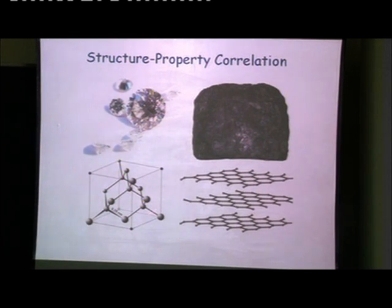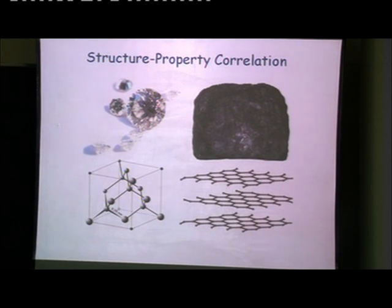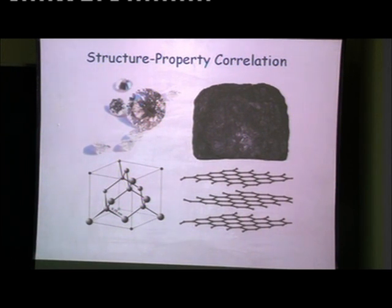Carbon can be tetrahedral or it can form hexagonal graphite-type sheets. So this structure — this is graphite, and this is diamond. The material is the same, but the way atoms are arranged in these two materials is very different. So the properties of these two materials are also very, very different. Diamond is one of the hardest materials, and graphite is very, very soft.